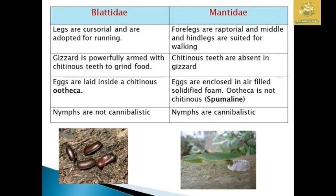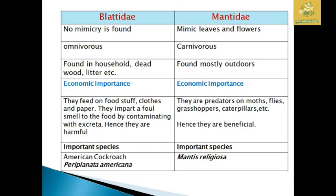The nymphs of Mantidae are cannibalistic even at early stages, whereas Blattodea nymphs are not cannibalistic. Mimicry is not found in Blattodea, but Mantidae mimic leaves and flowers. Blattodea are omnivorous, while mantids are carnivorous predators of various harmful insects. Blattodea are mainly found in households, deadwood, and litter, while Mantidae are found outdoors.